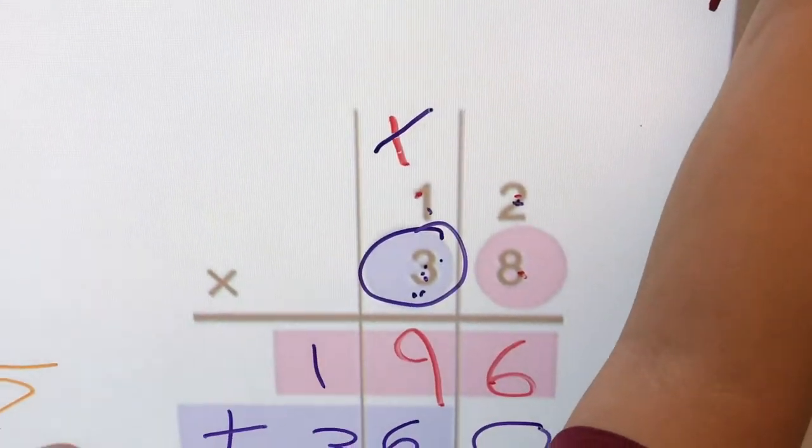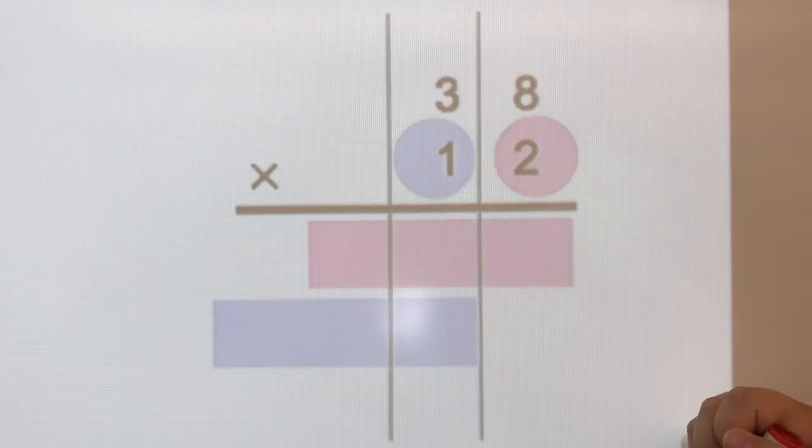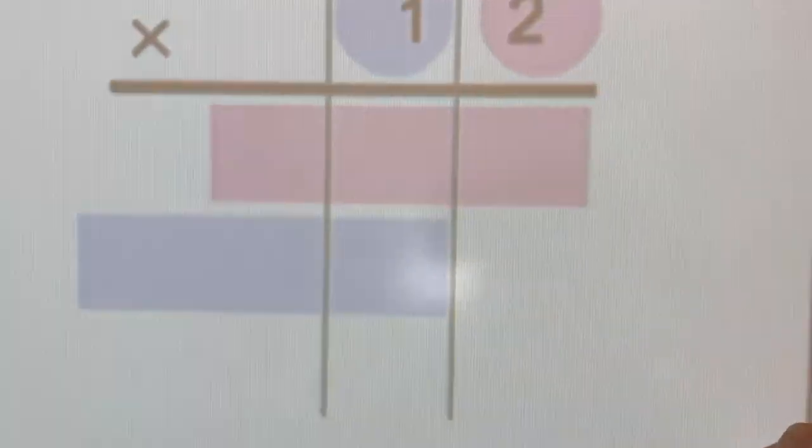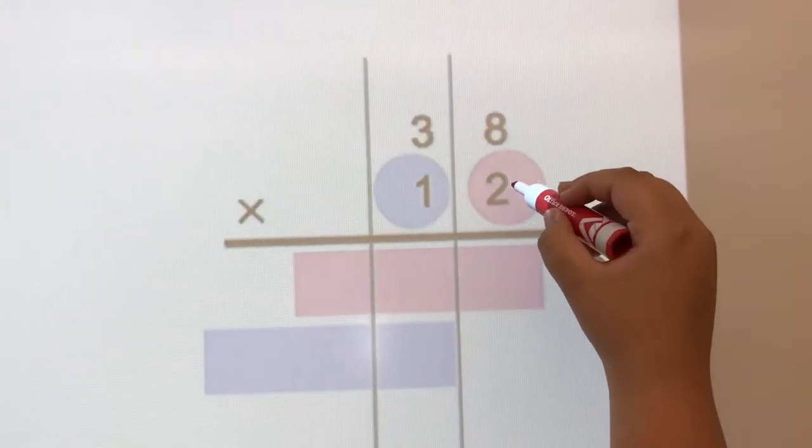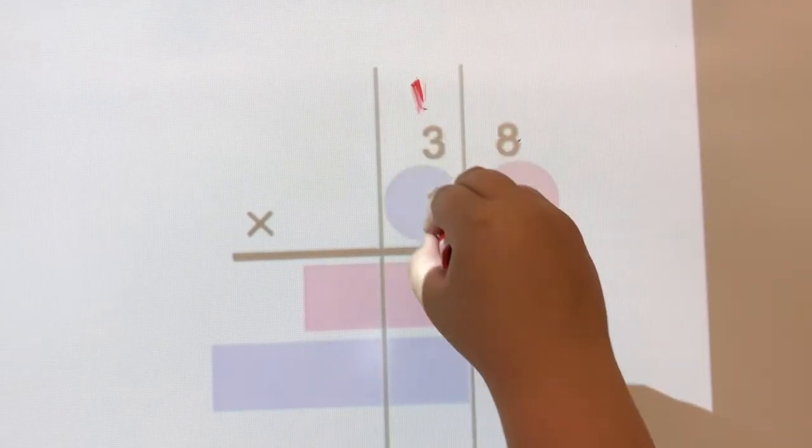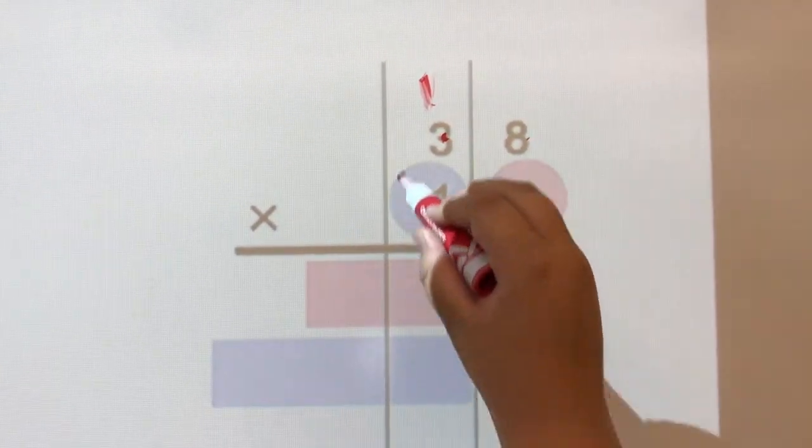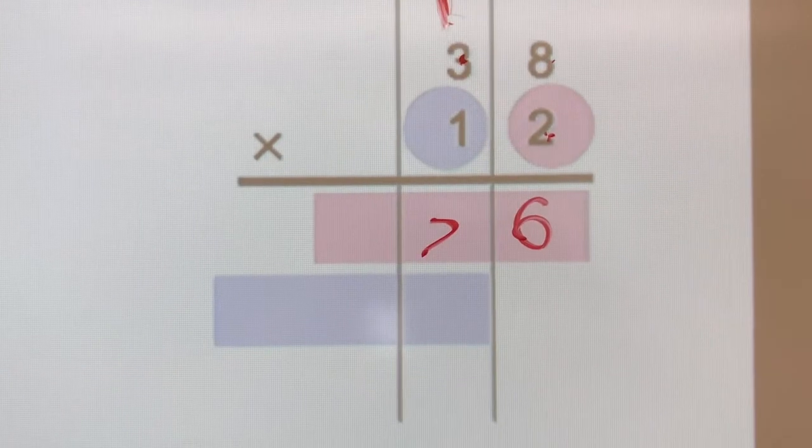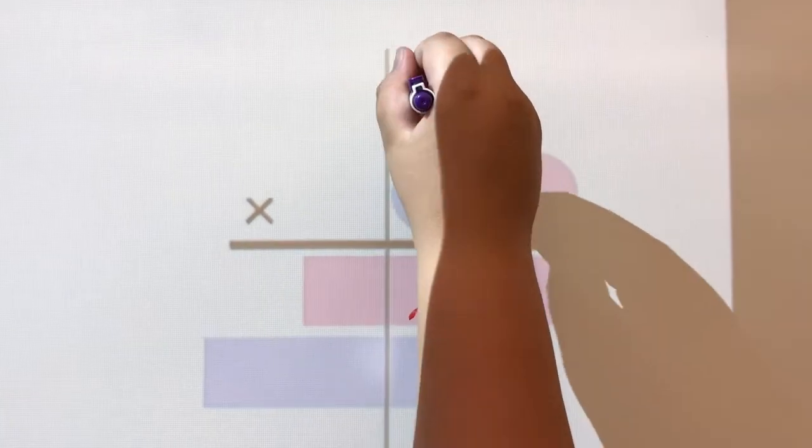Here's a similar problem. Instead of 12 times 38, it's 38 times 12. You should get the same product. But the subproducts will be different. But when you add them up, the whole product will be the same as 456. Alright. Let her rip. 2 times 8 equals 16. 2 times 3 equals 6 plus 1 equals 7. Okay. All done with red? Yep. Alright. Grab your blue. Let's cross out that regrouped 10. So cross out this. Yep.